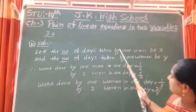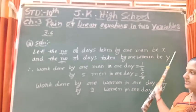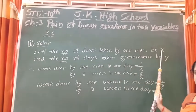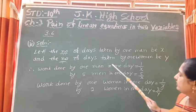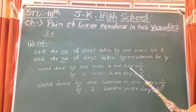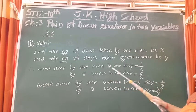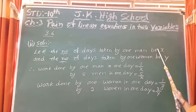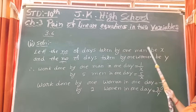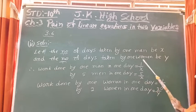Let the number of days taken by one man be x and by one woman be y. One man takes x days total, so the work done by one man in one day is 1 by x. Out of x days, he completes one day's work, written as 1/x.